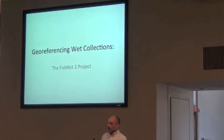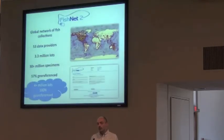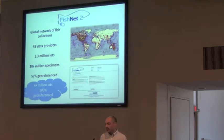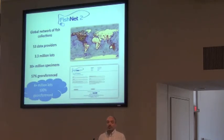I'm going to transition and talk about how we're using Geolocate within the FishNet georeferencing project. FishNet 2 is a global network of fish collections. Right now there are 53 data providers, with probably another 4 or 5 being added within the next week and another 10 within the next month. Currently there are 3.3 million lots and about 30 million specimens, and the good news is about 50% of that data is already georeferenced.